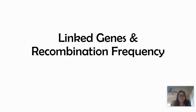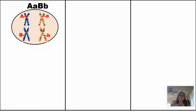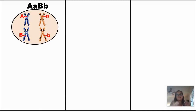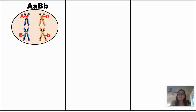In this video we're going to look at linked genes and recombination frequency. This is part of a non-Mendelian genetics unit. Before we can understand why it's called non-Mendelian genetics, let's revisit Mendel and his two laws. Mendel, when studying pea plants, studied traits that were located on separate chromosomes. Today we're going to see what happens when traits are inherited on the same chromosome.